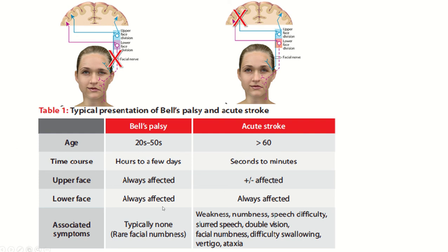To summarize the differences: in Bell's palsy, both the upper and lower parts of the face are always affected. In stroke or upper motor neuron type of lesion, the upper part may or may not be affected because it is supplied by both motor cortices. If both motor cortices are involved in the stroke, the upper part is affected; but if only one side is involved, the other side compensates and no lesion is found in the upper part of the face.